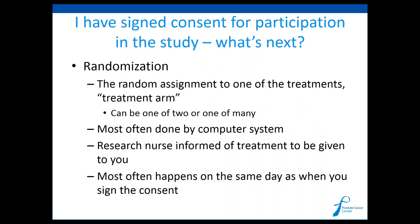Once informed consent is completed and the papers are signed, we often proceed to randomization. This is where the treatment you will receive in the study is decided, and it depends on the type of study. Classically, randomization is between two different treatment arms, but newer studies may have many treatment arms. This may be done randomly by a computer system, or in some cases it's not a randomized trial. The research nurse will inform you of the treatment assigned, and typically this happens on the same day you've signed consent.